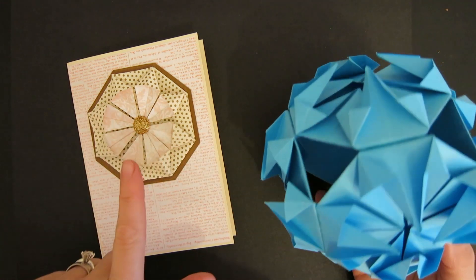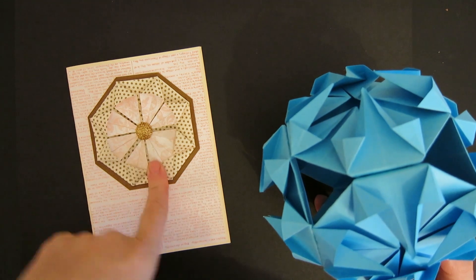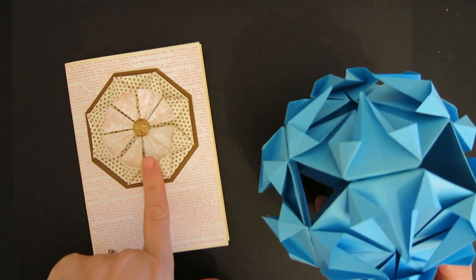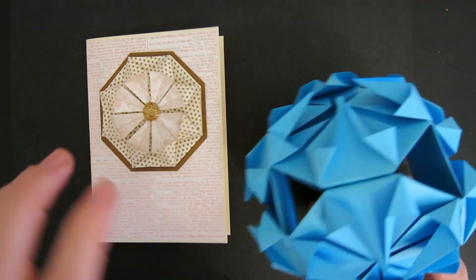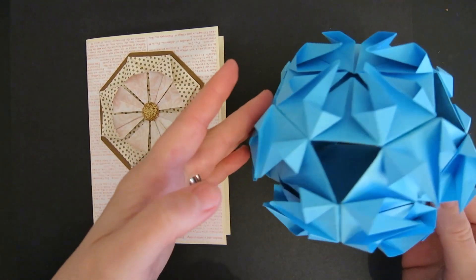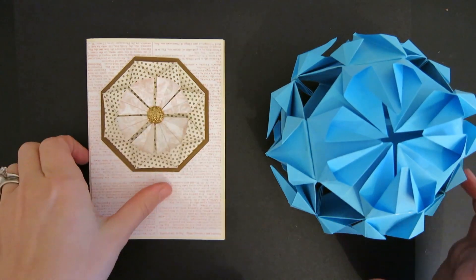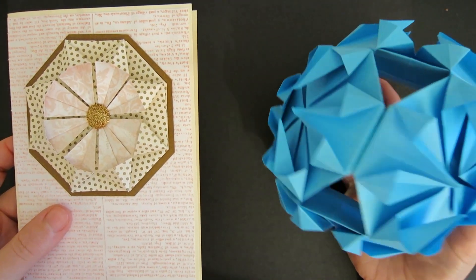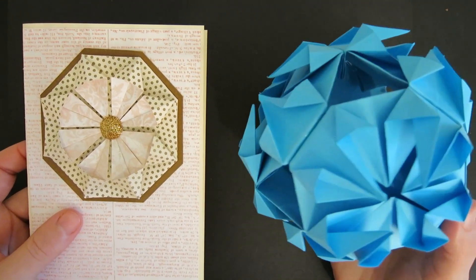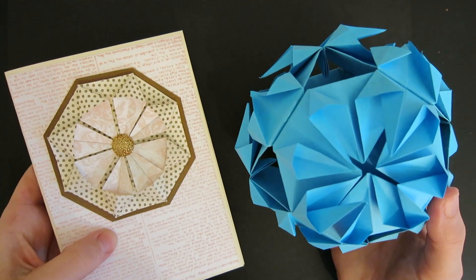Two ways. You can either turn one six inch square into a medallion and pop it onto a card, super cute, or you can make six of them and then glue them all together to create a beautiful three-dimensional piece which you could hang up from the ceiling or any number of things.